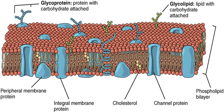Membranes in cells typically define enclosed spaces or compartments in which cells may maintain a chemical or biochemical environment that differs from the outside. For example, the membrane around peroxisomes shields the rest of the cell from peroxides — chemicals that can be toxic to the cell — and the cell membrane separates a cell from its surrounding medium. Peroxisomes are one form of vacuole found in the cell that contain by-products of chemical reactions. Most organelles are defined by such membranes and are called membrane-bound organelles.